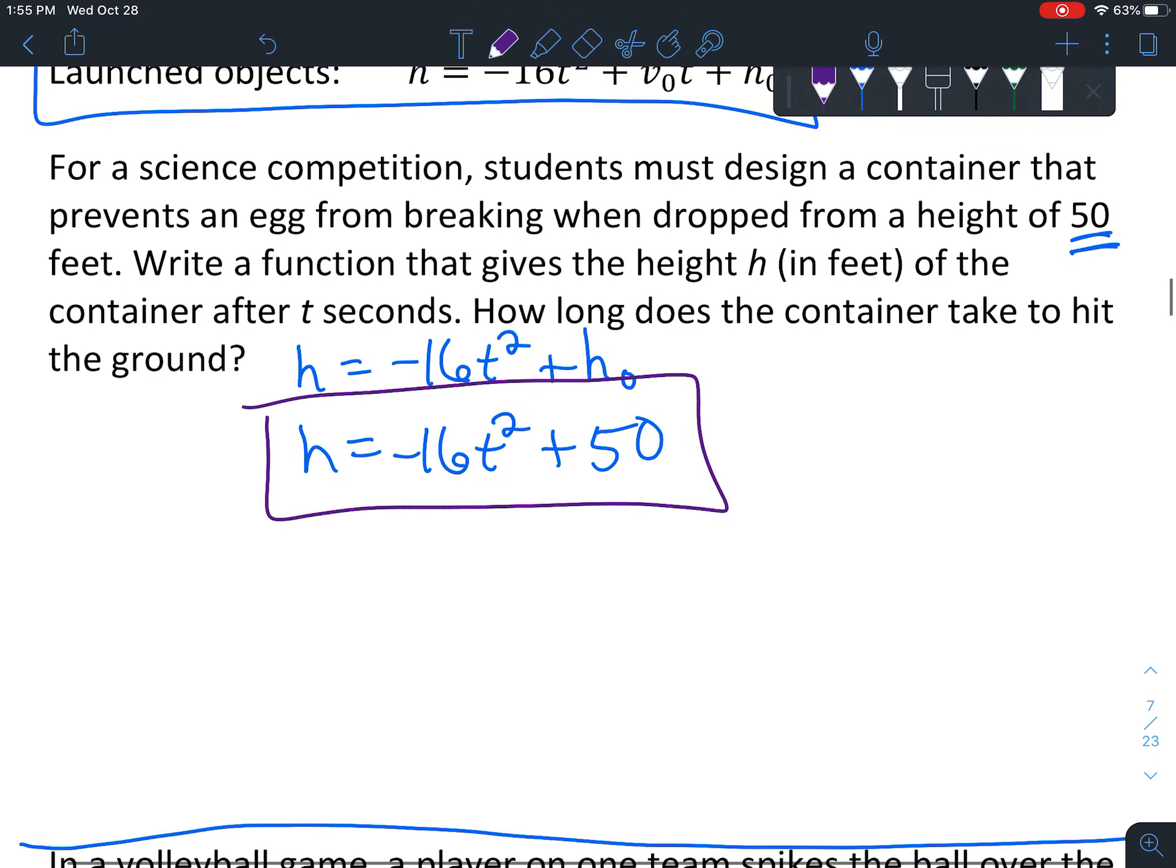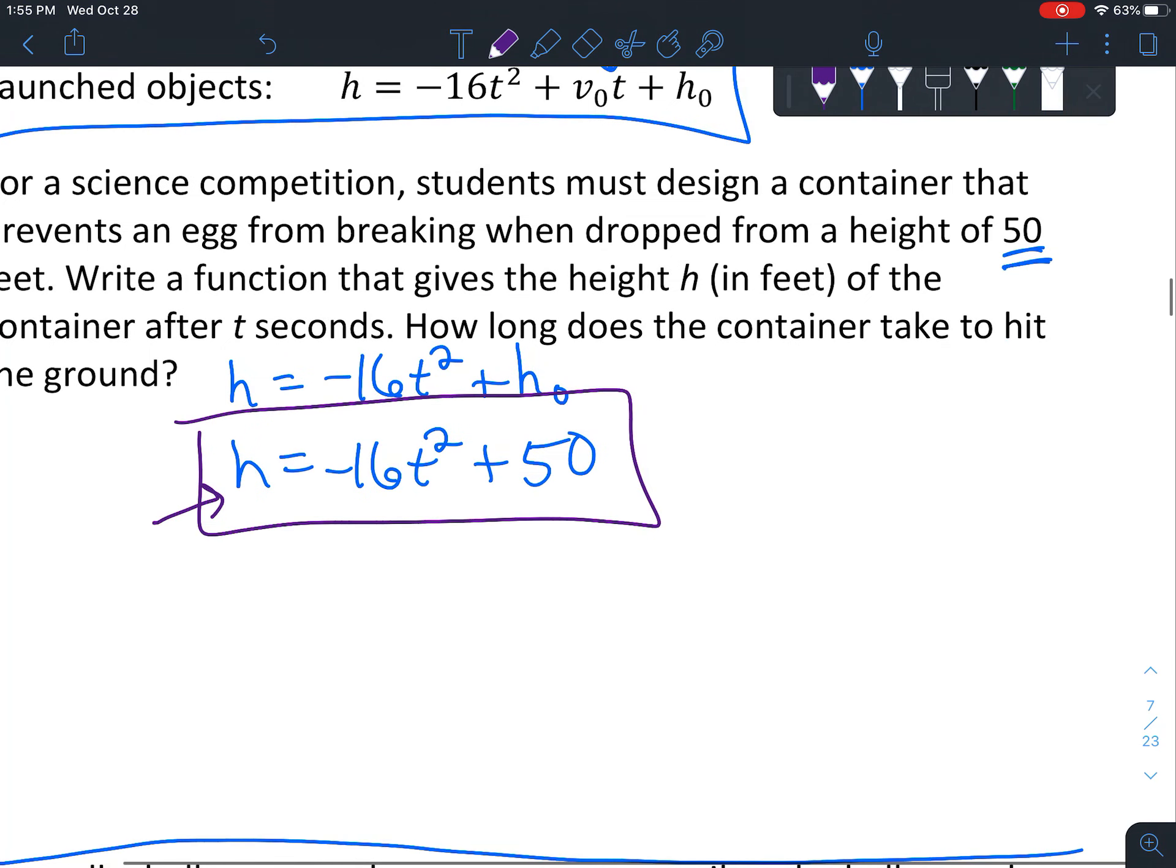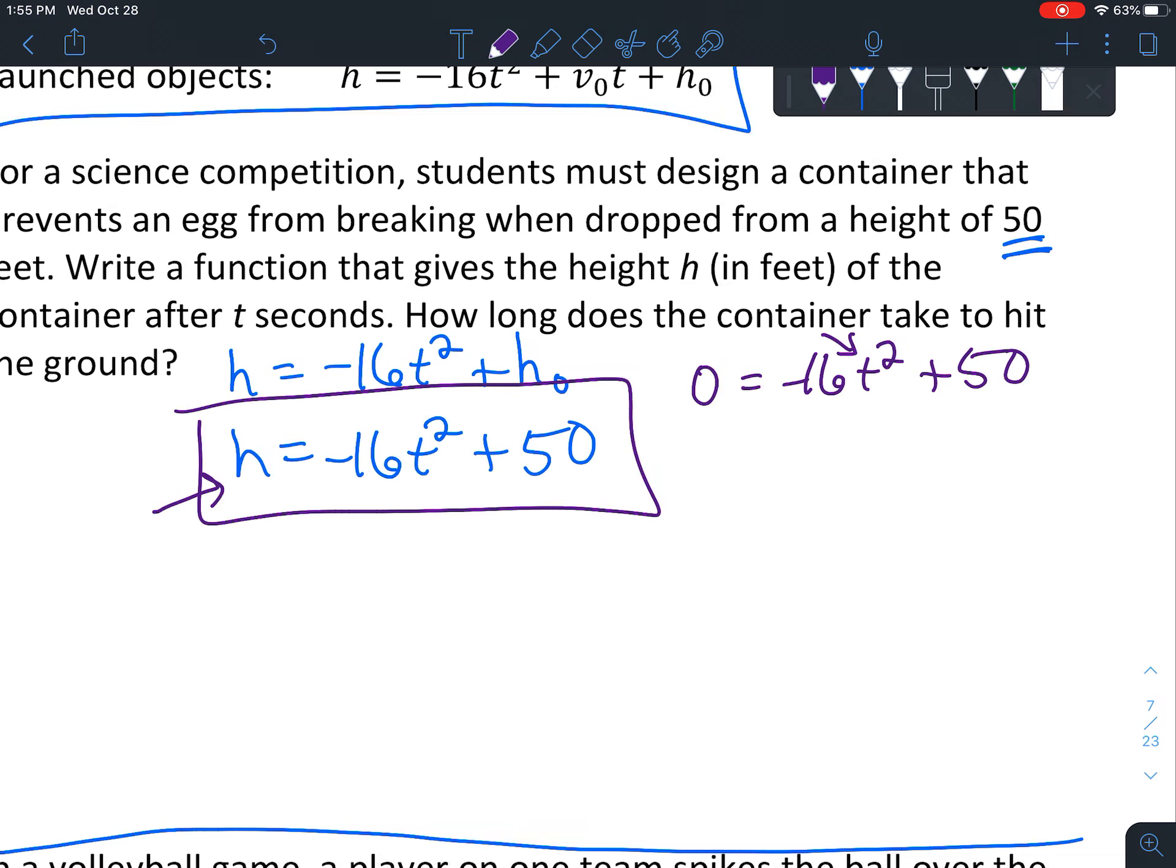Now the second question, it says, how long does the container take to hit the ground? So that's when you substitute in 0 for h, because the height of the container is 0 at ground level. So we're going to say 0 equals negative 16t squared plus 50. To solve this one, you'll notice that we only have one variable squared, which means you can actually just solve by taking the square root. But first you have to get the square root by itself. So we're going to subtract 50 from both sides.